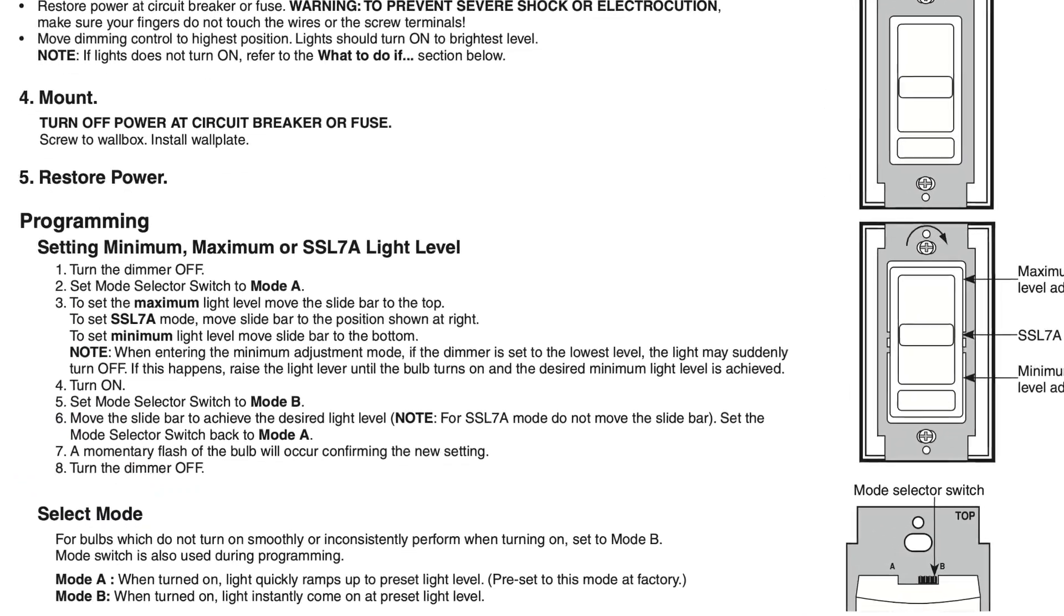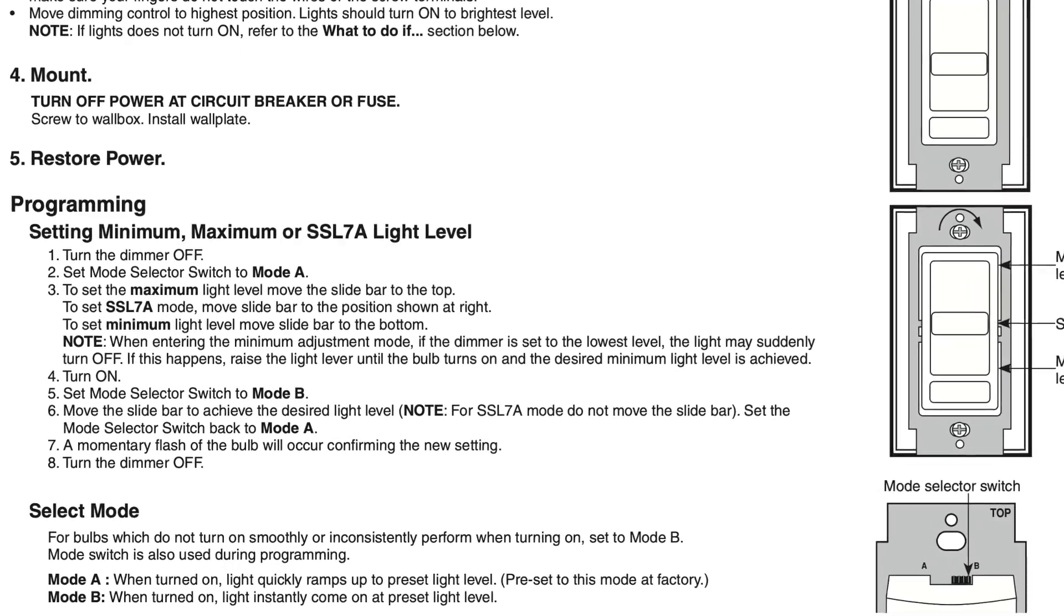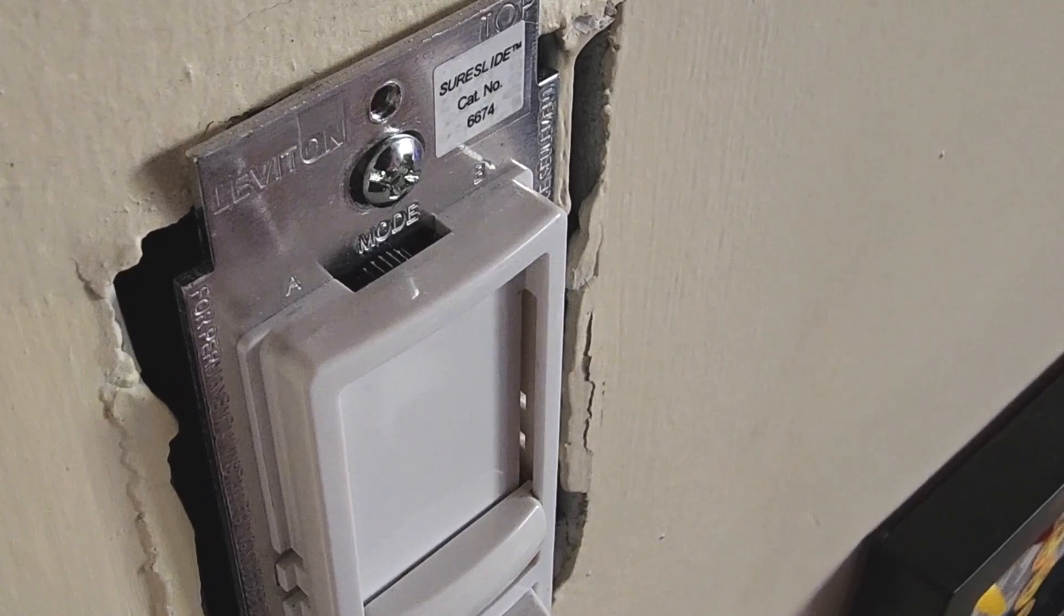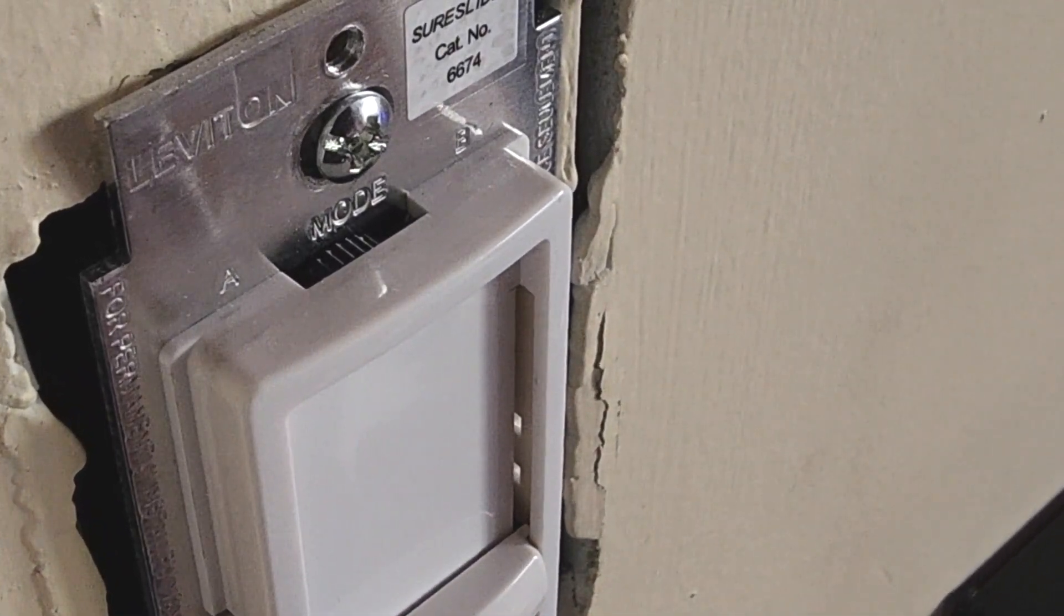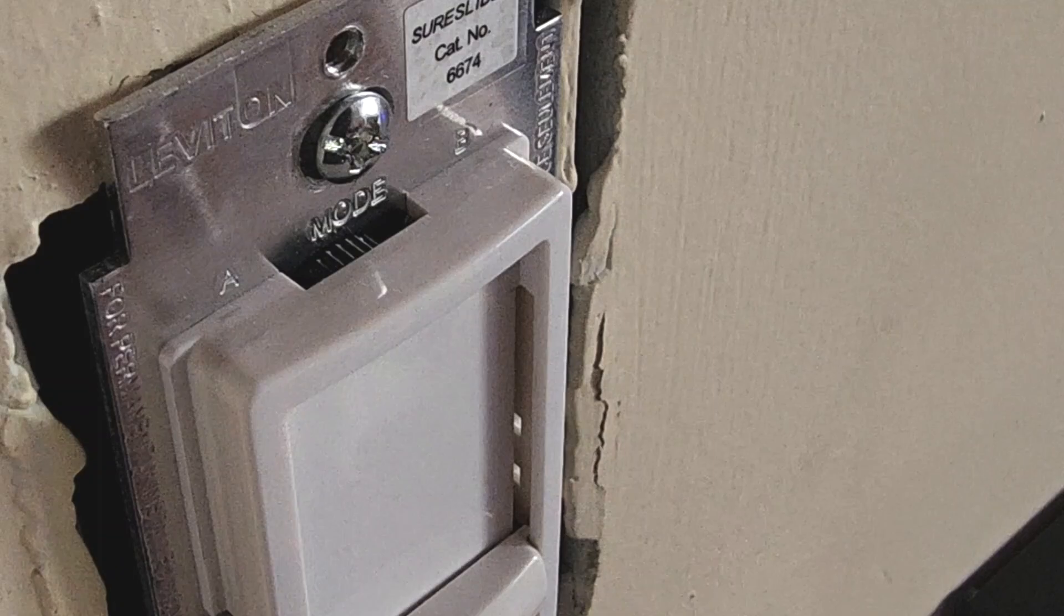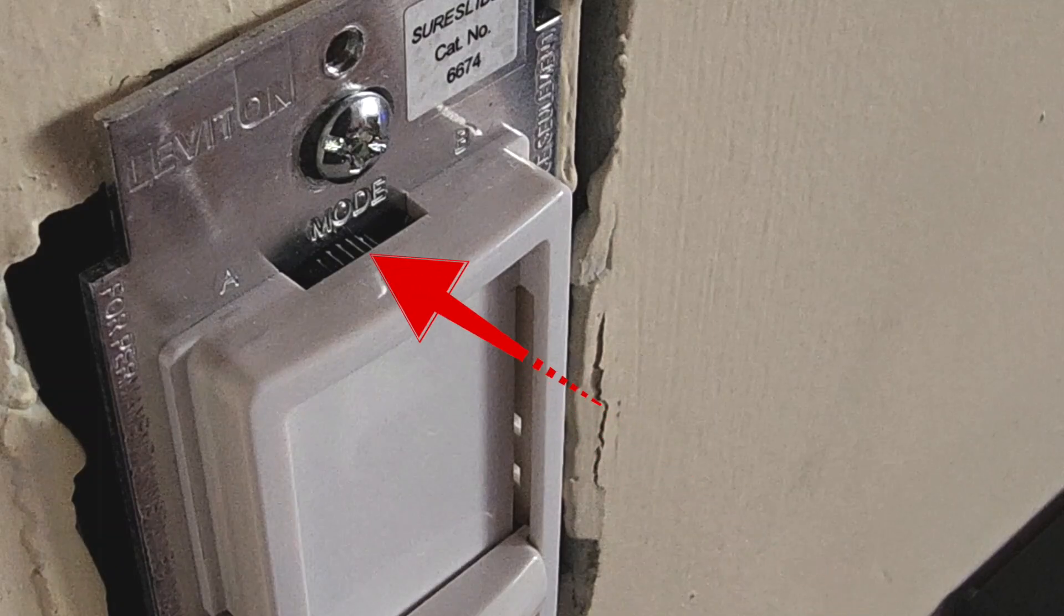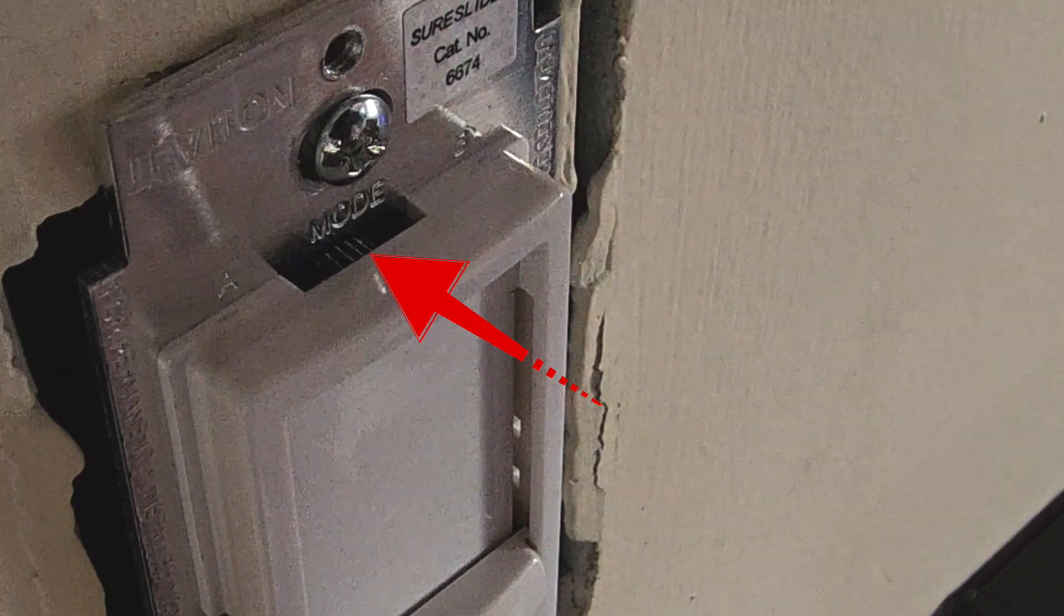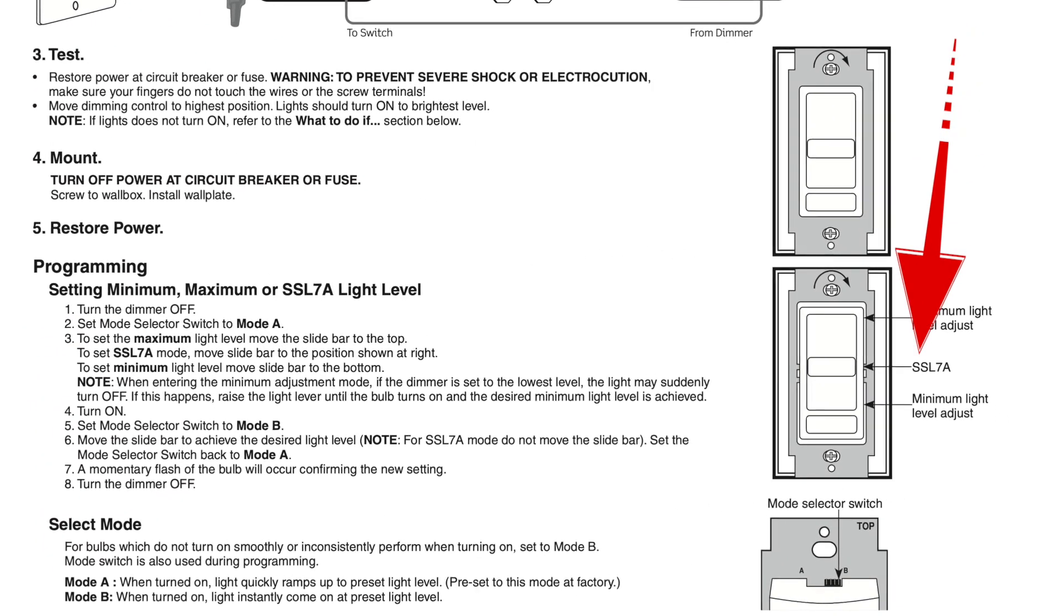You can also use this switch to program your preset light level. For example, if you start using your dimmer right away and you notice it's flickering at the lowest level or it doesn't come on, you can actually use this mode selection switch to program the light levels at the high end and the low end. There's also something in the instructions about this SSL 7A.